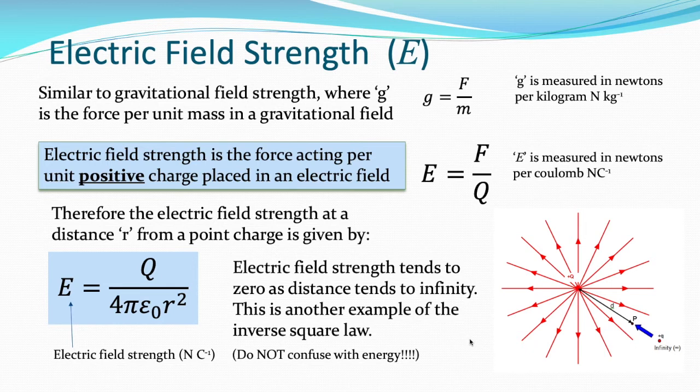Don't forget that E in this relationship is electric field strength in newtons per coulomb — don't confuse it with energy. For energy in electrostatics or electromagnetism, we will possibly use the symbol W, or Ep if it's potential energy, or Ek if it's kinetic energy. But E on its own means electric field strength.